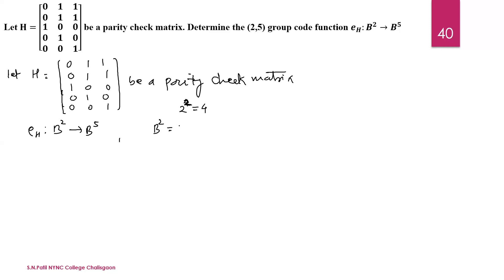In B^2, there are 2-digit numbers with 4 elements of the type: (0,0), (0,1), (1,0), and (1,1). The element b in B^2 is of the form b = (b1, b2).